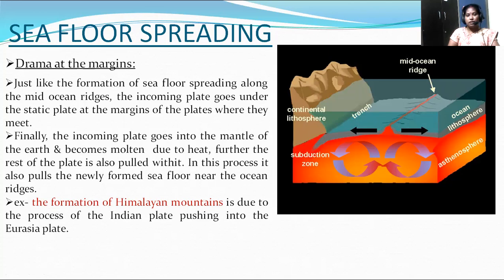Trench is the deepest place in the oceanic crust — like deep valleys on the outer surface of the earth, you can find the deepest valleys in the oceanic crust called trenches. So ridges are the hills and trenches are the lowest places on the oceanic crust. When this plate moves in that direction, the newest formed crust is also pulled away under the static plate, and likewise the sea widens and spreads.